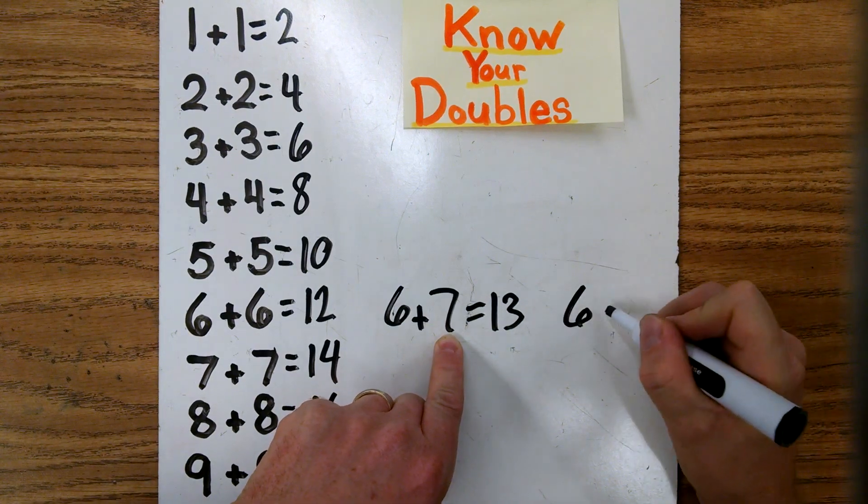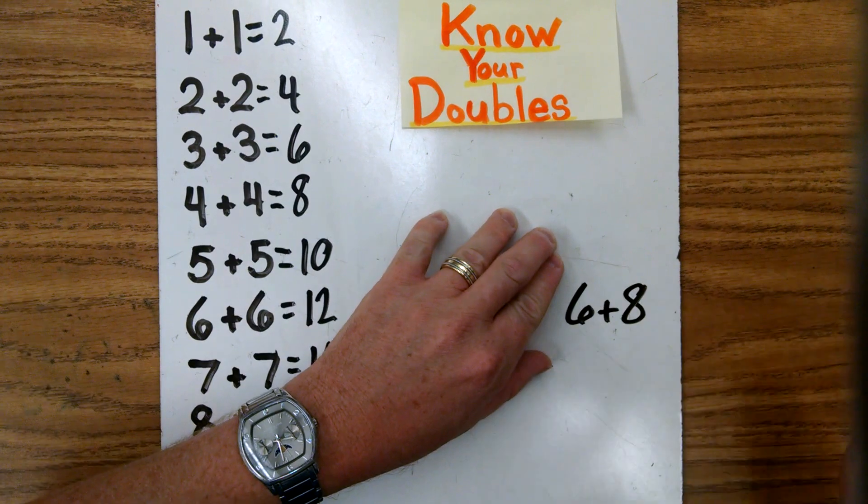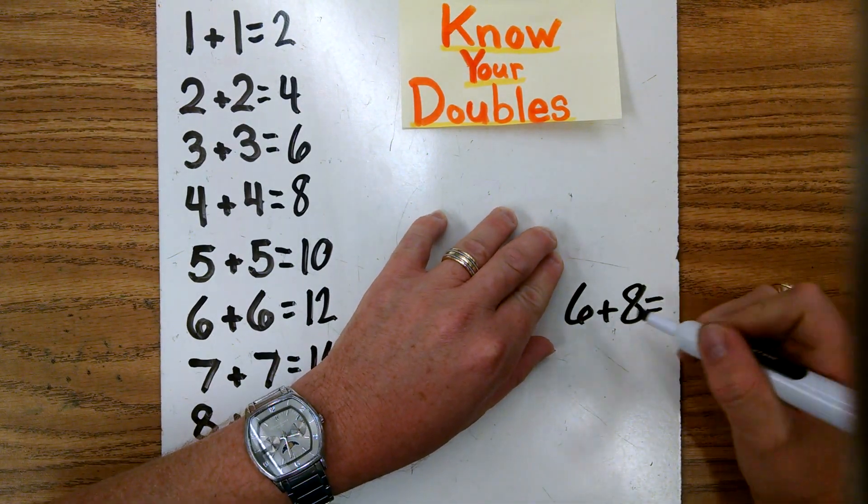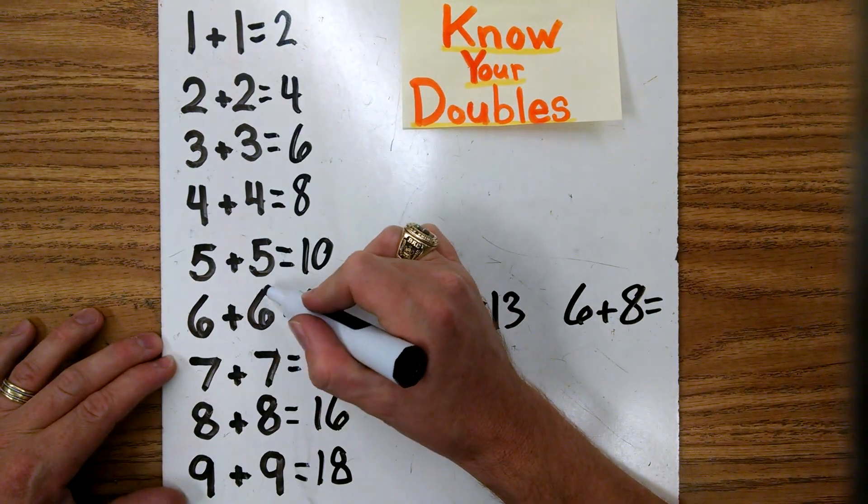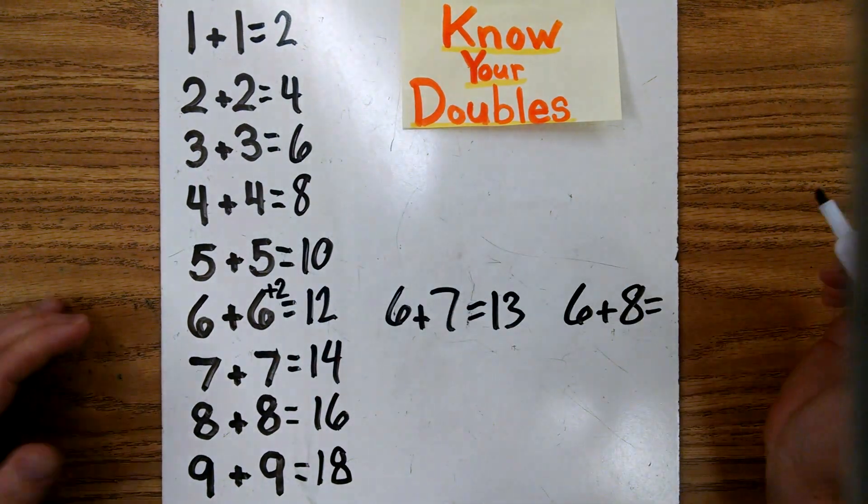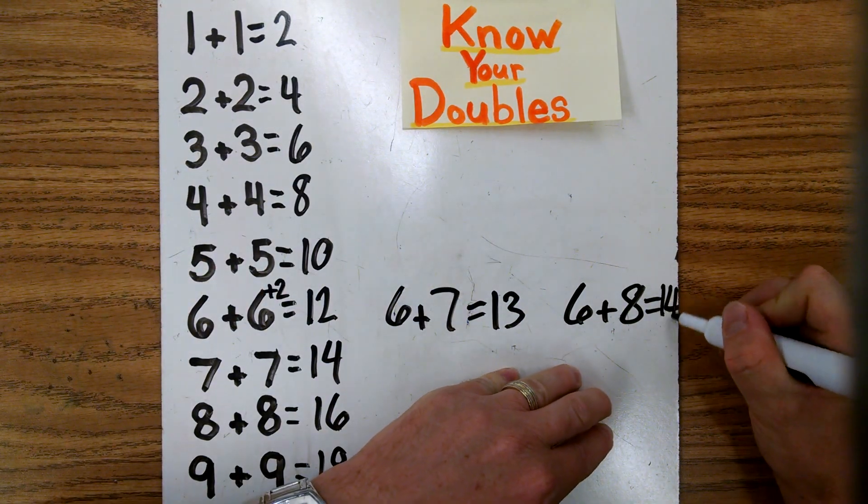Another example would be 6 plus 8. If you know that 6 and 6 is 12, automatically when you see this, that'll pop into your head. And you'll say, okay, that's 12. 8 is 2 more than that. So it's like doing 6 plus 6 plus 2. So 6, 12. And that gives you 14. 2 more is 14.